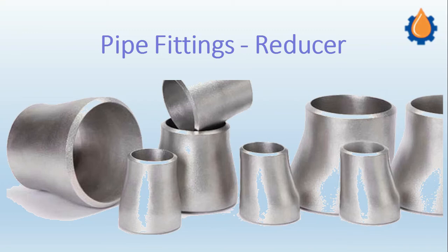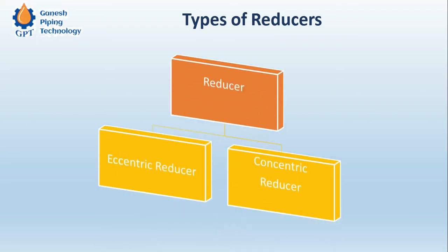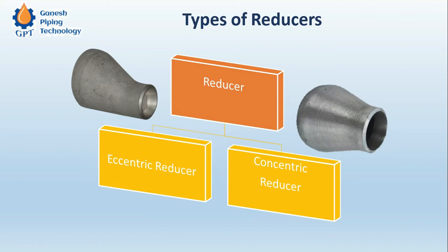There are basically two types of reducers: the eccentric reducer and the concentric reducer. From the geometry itself you can see that in the eccentric reducer, this is the small pipe side and this is the large pipe side.